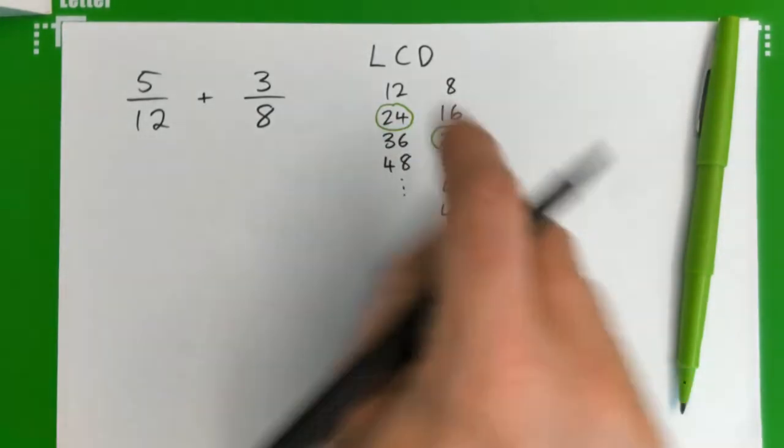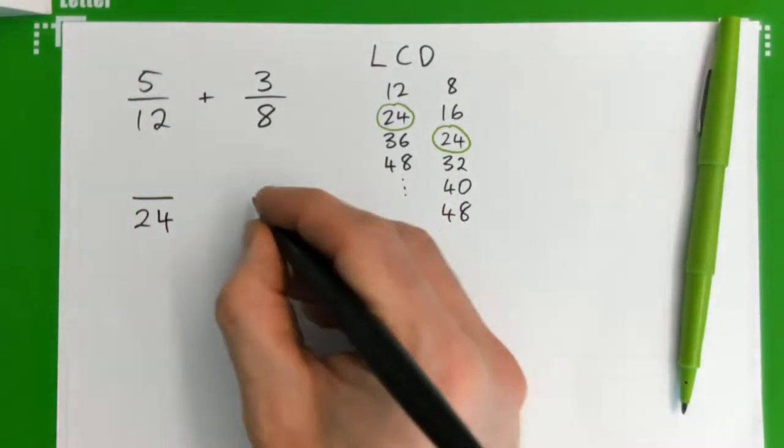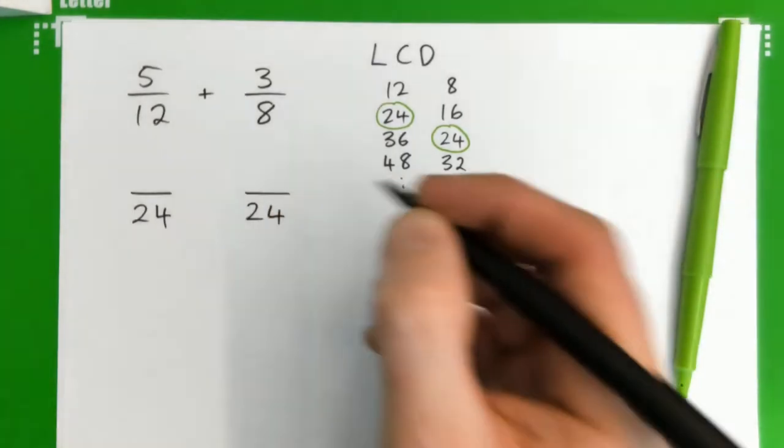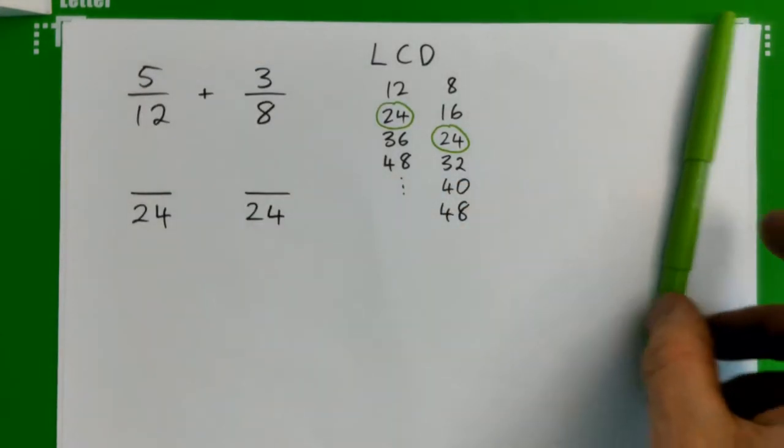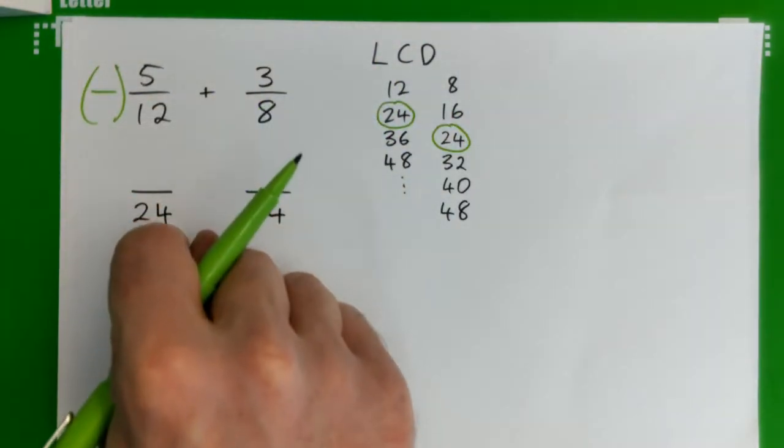So, we found our lowest common denominator. We're going to have 24ths on the bottom. Turn each fraction into 24ths. So then we think, what do I need to multiply by to turn this into 24ths?